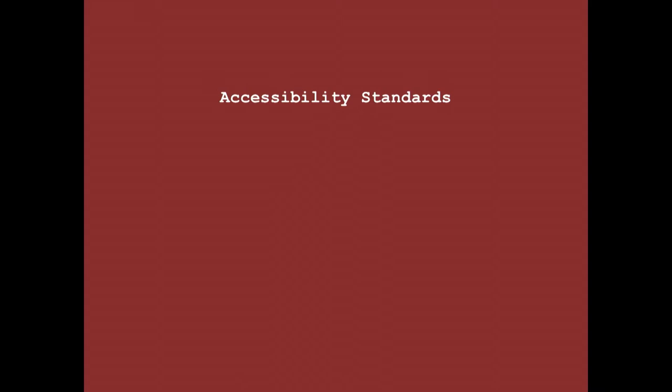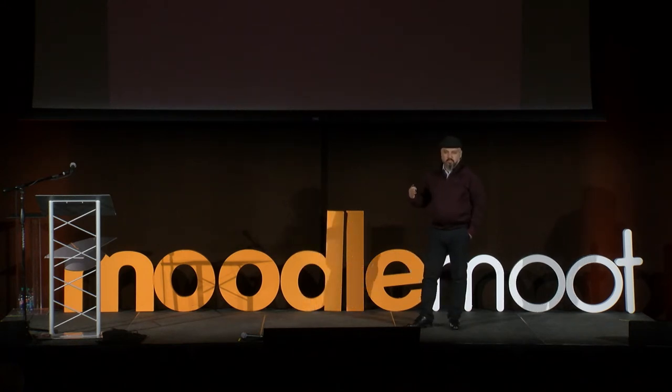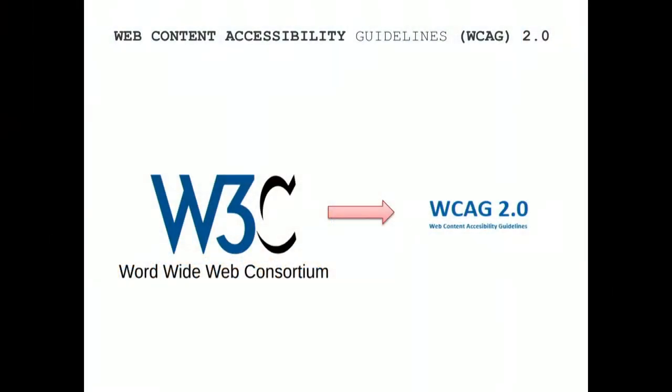Basically, there are many types of disabilities and many ways to modify your web application, web tool, web content, and learning material to become more accessible. The W3C — the World Wide Web Consortium — has written the WCAG 2.0 Web Content Accessibility Guidelines, which state what guidelines your web content needs to abide by to be compliant to a certain level: single-A, double-A, triple-A, etc.